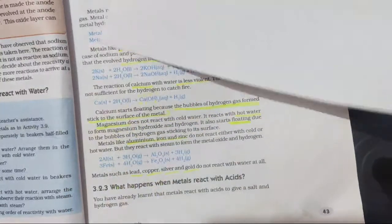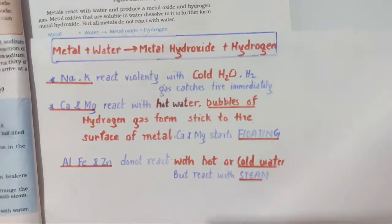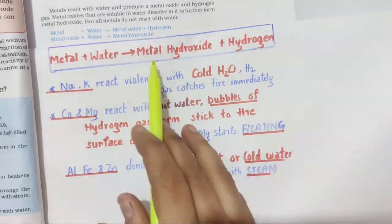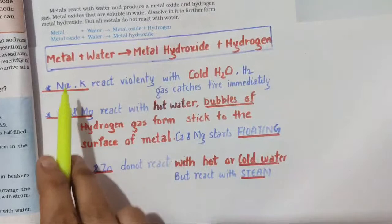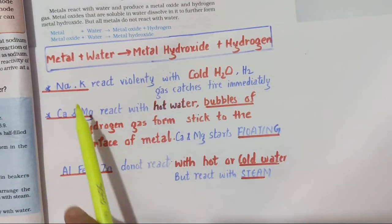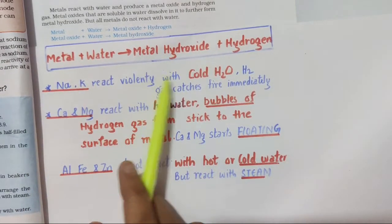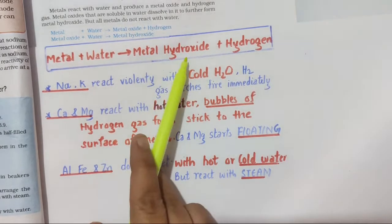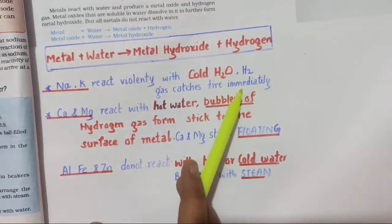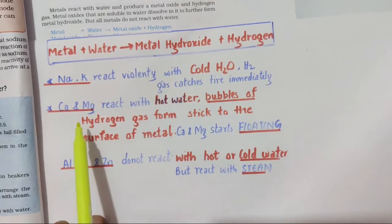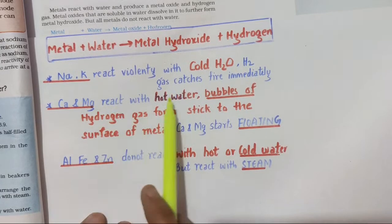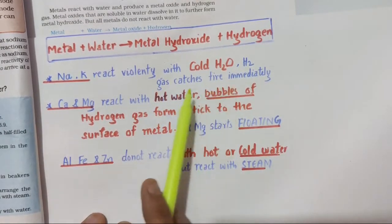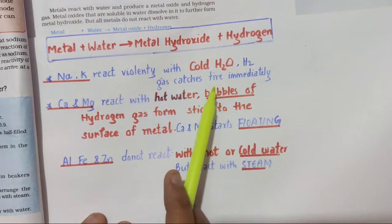Revision of the topic — what happens when metal reacts with water: it forms metal hydroxide and releases hydrogen gas. Different metals have different reactivity. Sodium and potassium react violently with cold water; the reaction is so violent that it catches fire immediately.